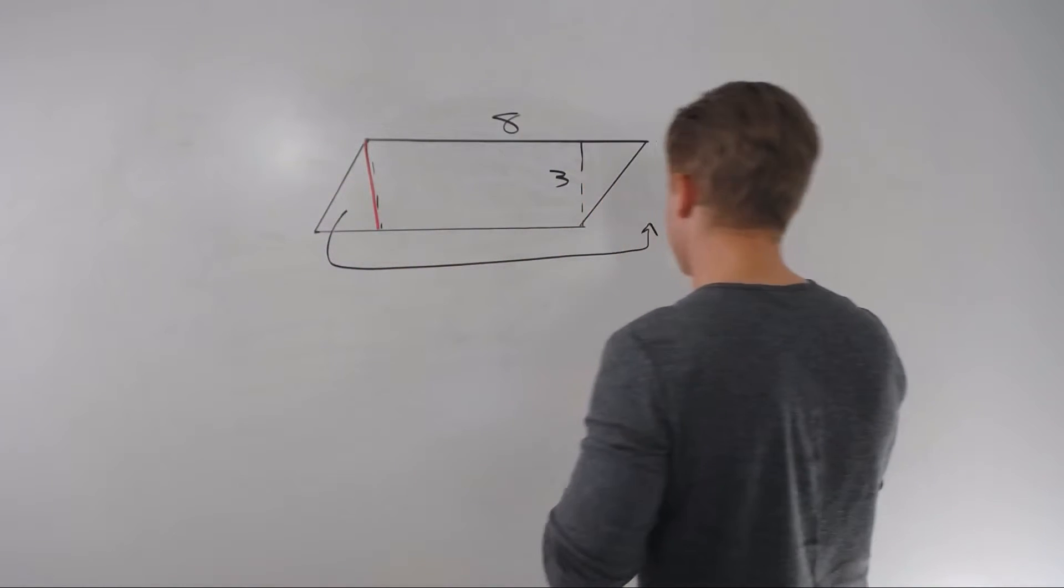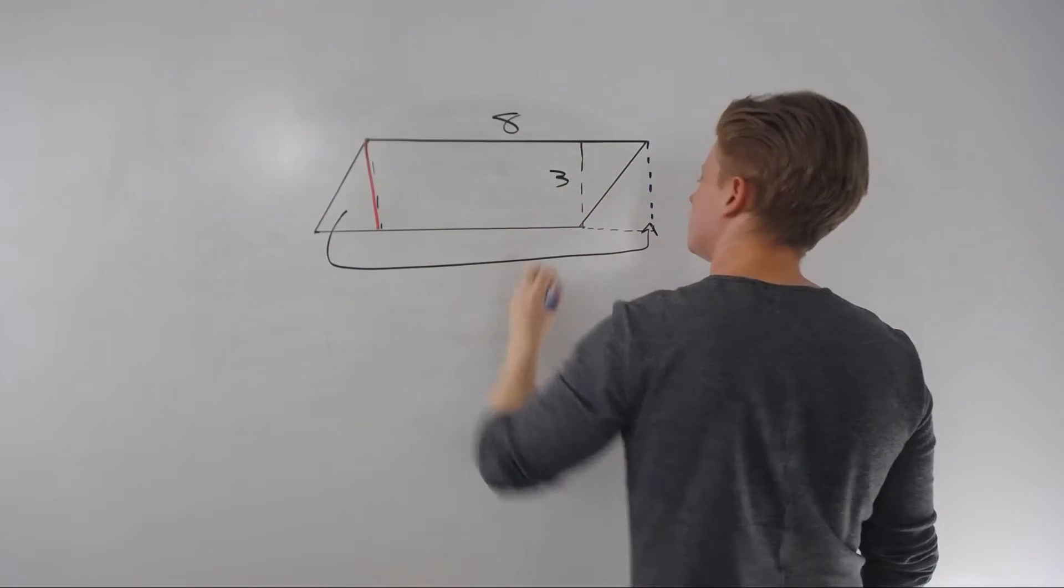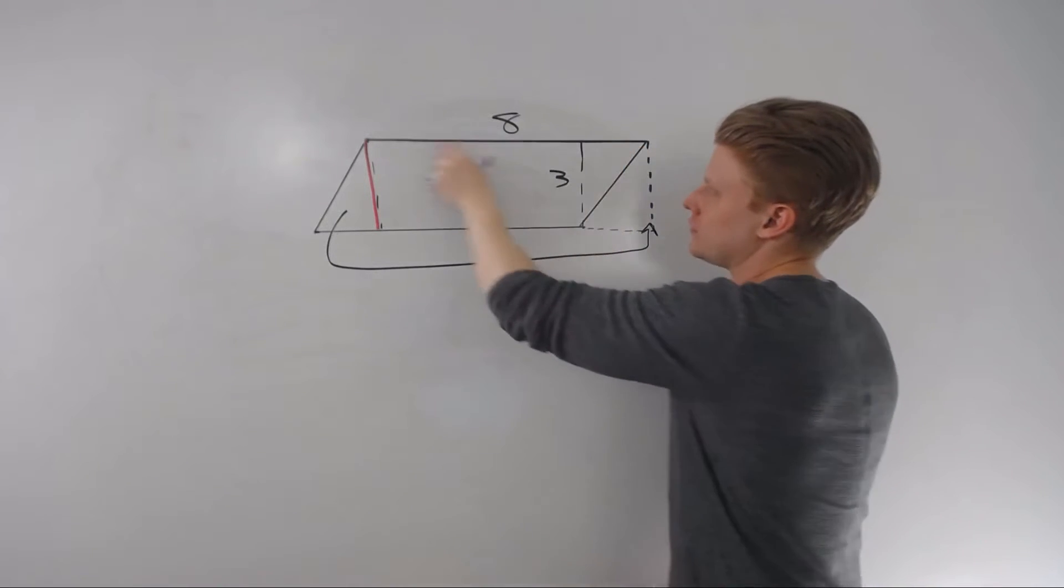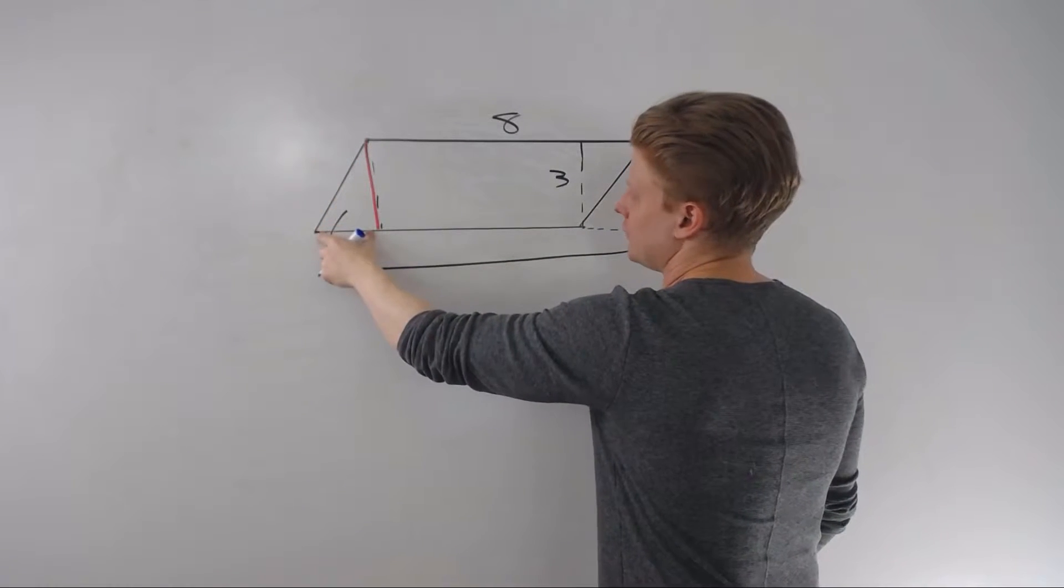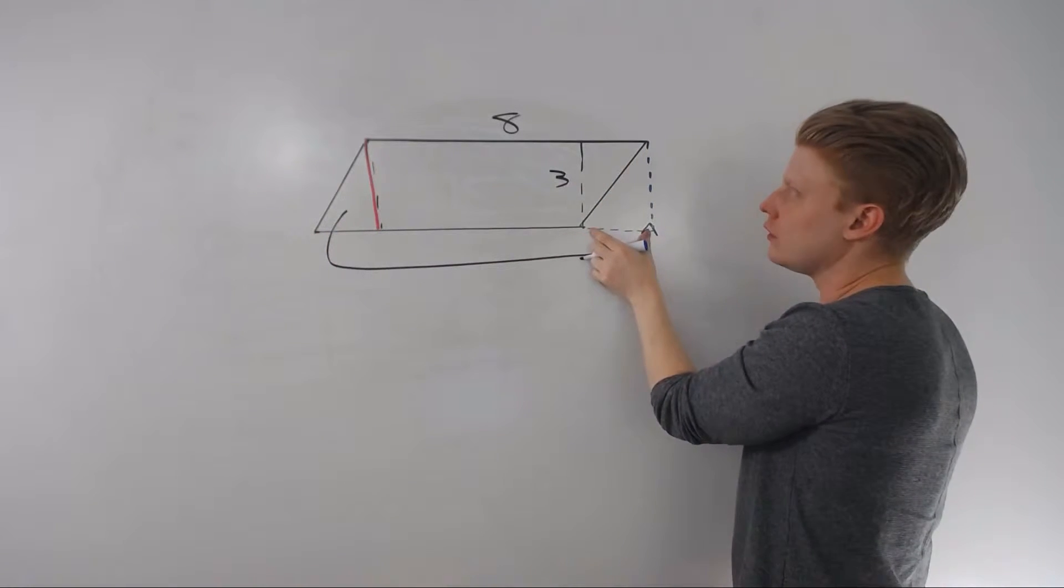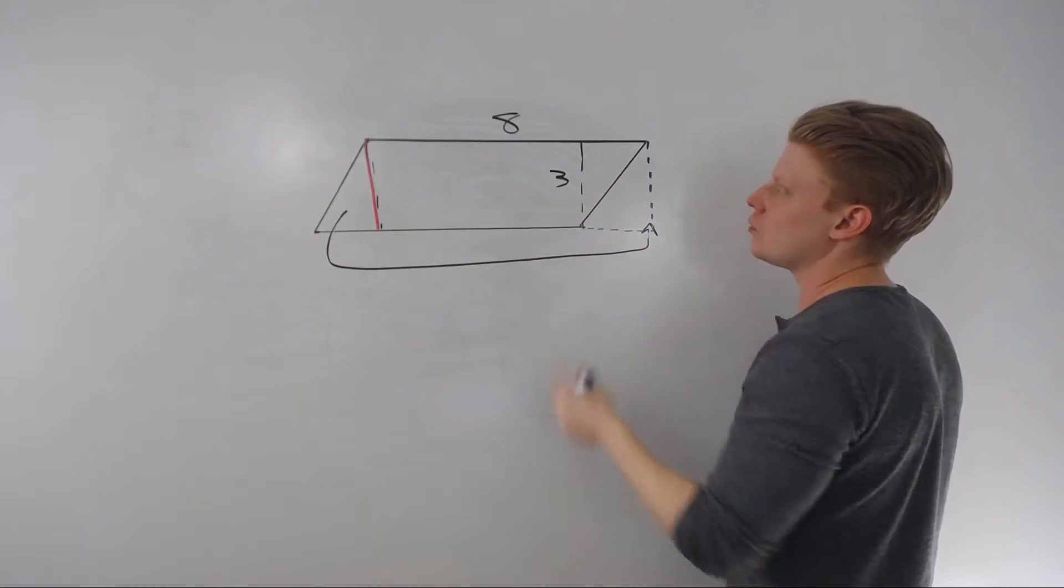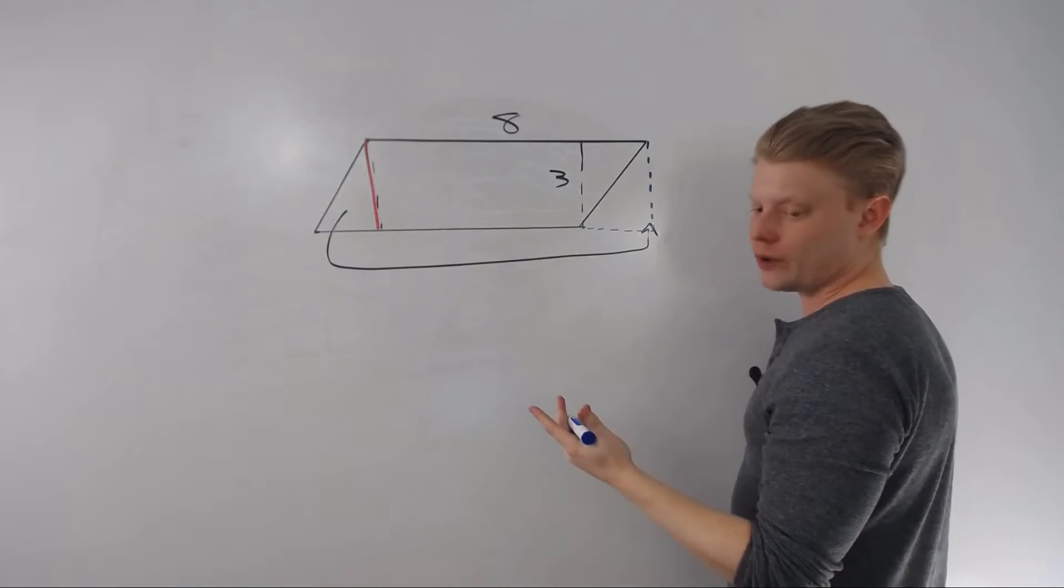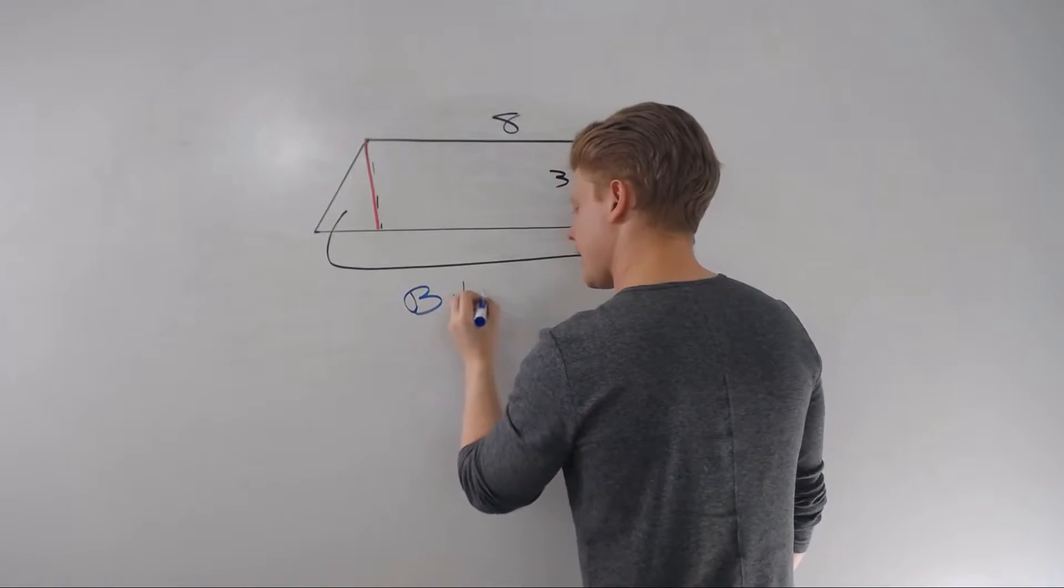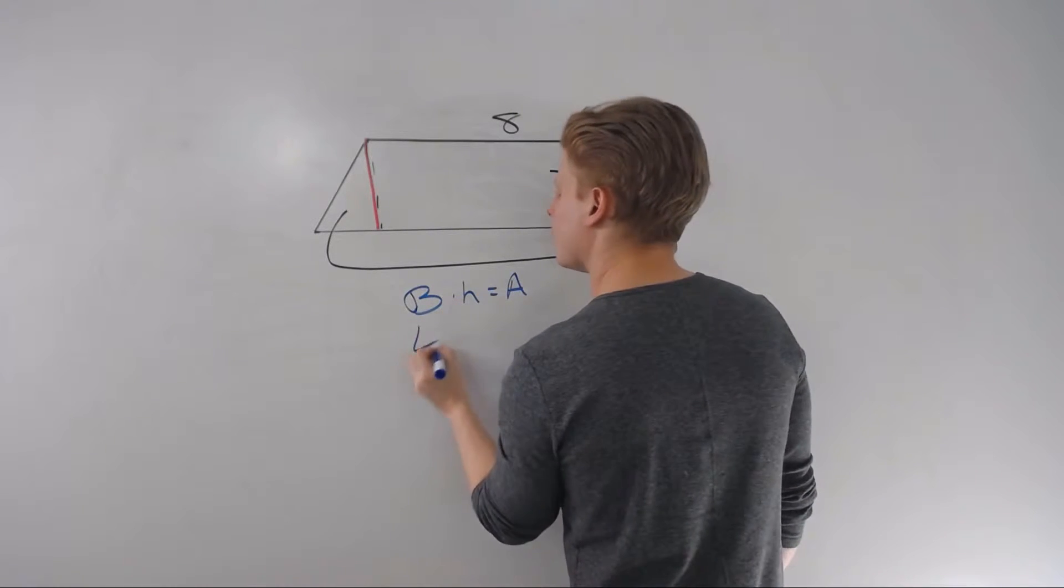And over here, all of a sudden, I want to have something that looks like this. I also have a rectangle. And look, my base hasn't changed, right? This bit that went over here is still here. Didn't add anything to the top. That dimension didn't change. The height didn't change. So really, to be honest with you, the easiest way to find the area of a parallelogram is base times height or length times width.